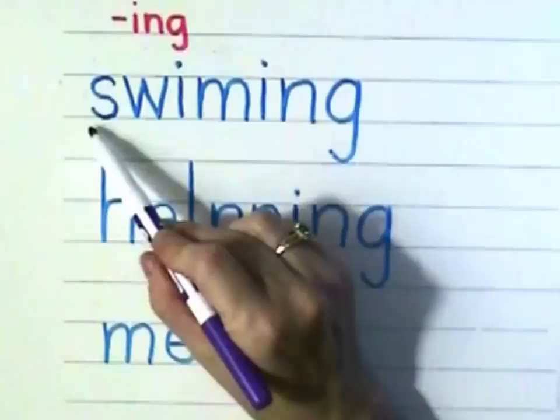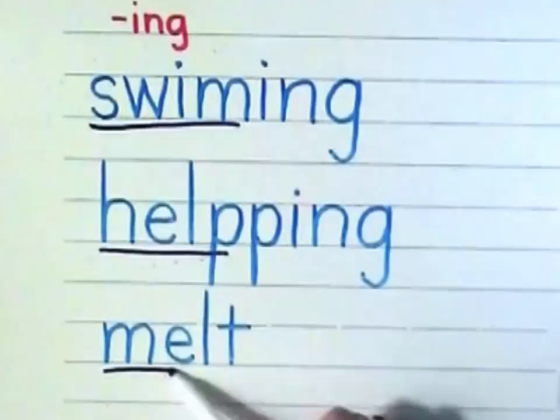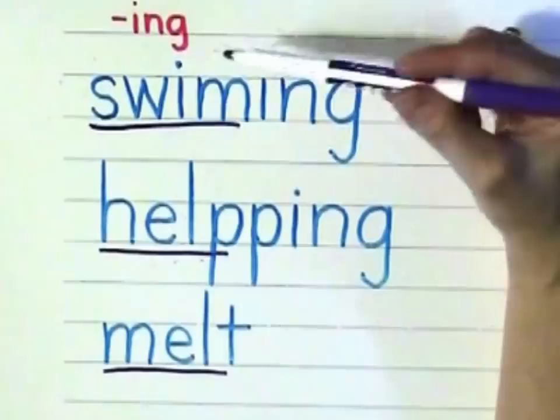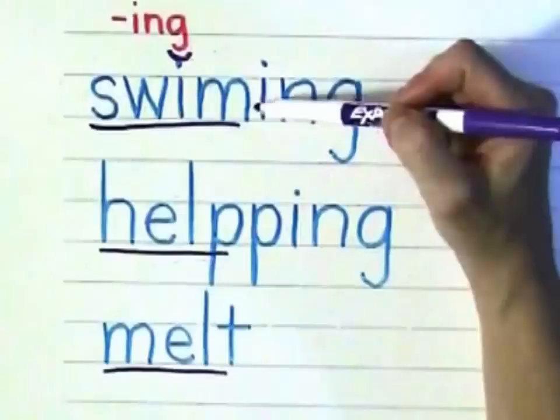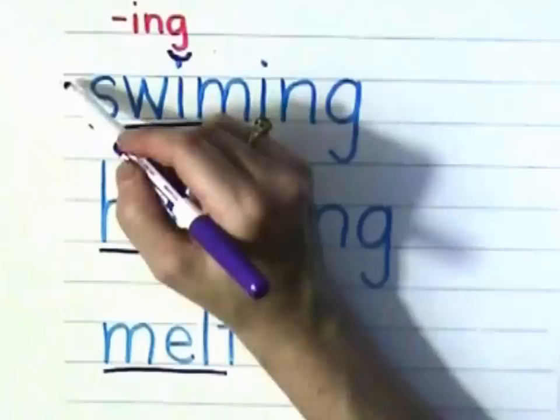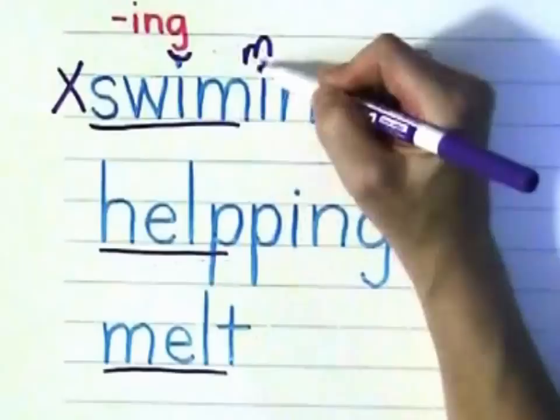All right, let's look at these three words. We have the root words "swim," "help," and "melt." Let's see if the suffix ING was added correctly on the first two of them. They made "swimming" — let's see if they did it correctly. Here's the short I. How many consonants do we have before we get to our suffix? We only have one, so this word is wrong. We should have had another M in there to make "swimming" correctly.